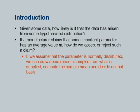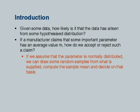Given some data, how likely is it that the data has arisen from some hypothesized distribution? For example, if a manufacturer claims that some parameter has an average value M, then do we accept that? If somebody says the lifetime of a bulb is so many hours, but the performance is inherently probabilistic, how do we accept or not accept the manufacturer's claim that the average is indeed so and so?